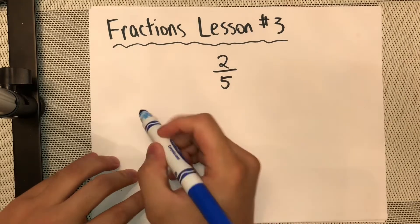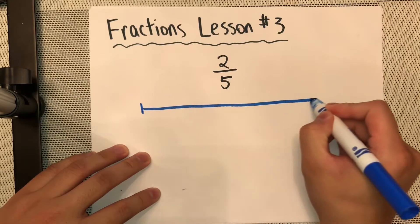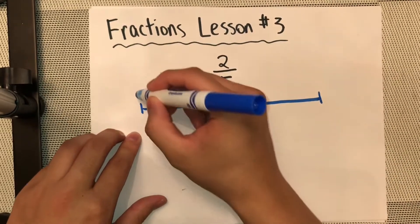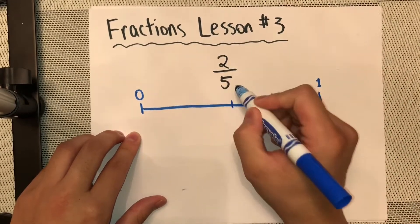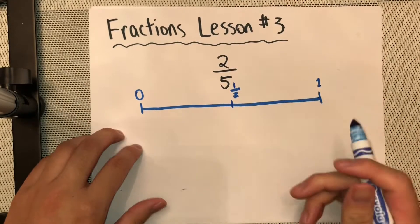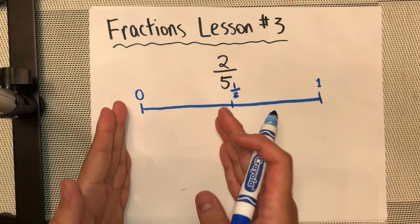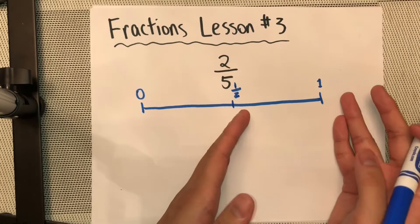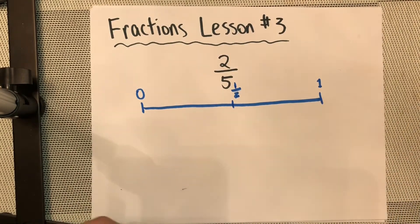Well, one way I can do this is to use a number line. Our number line goes like this: this side is 0, this side is 1, and the middle is half — that's our benchmark. We know if a fraction is less than half it's closer to 0, and if it's more than half it's closer to 1. So we need to find where 2/5 is.